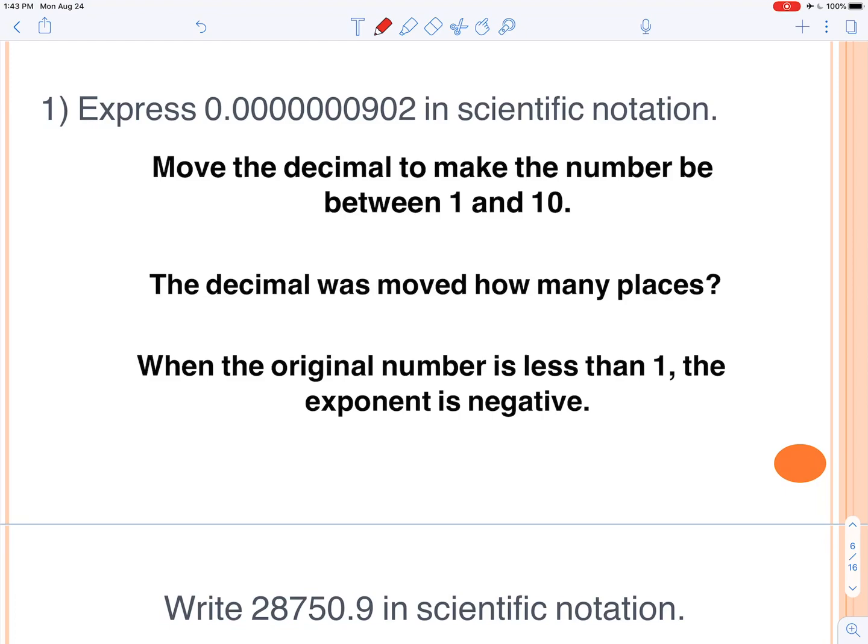Let's keep it going. So express a small number in scientific notation. Same thing, we want to move the decimal to make it between 1 and 10. So what number would we end up with if we move that decimal? Okay, so if you move that decimal correctly, we're going to get 9.02, and then we want to count how many places did we move that decimal.